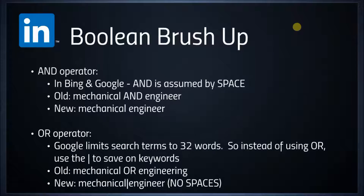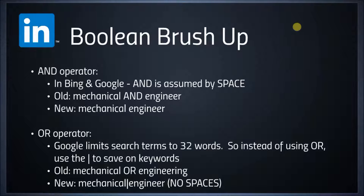The first thing we want to do is brush up on our Boolean language. Most of us are familiar with the AND, OR, and NOT operators. So first, the AND operator functions to combine two words. For example, if we want the words mechanical and engineer in a search, we would type mechanical AND engineer.